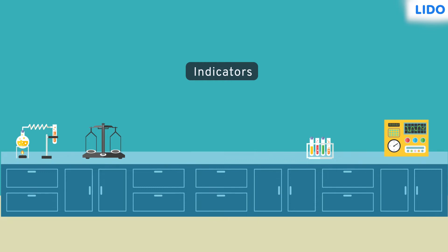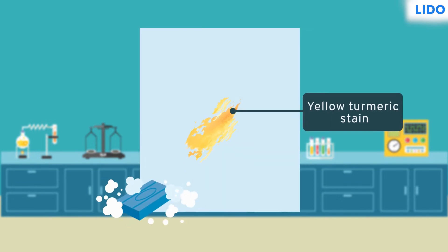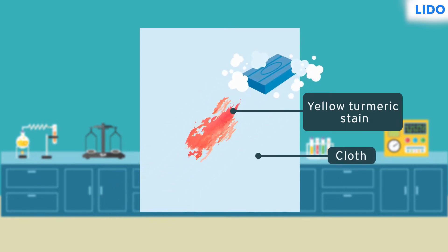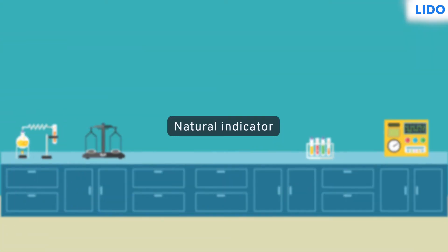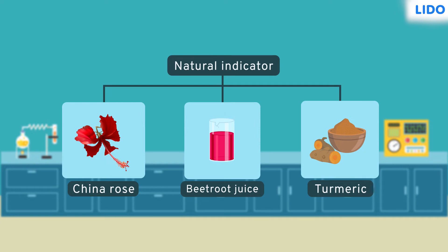These indicators are of two types: natural and laboratory indicators. Have you observed a yellow turmeric stain on a white piece of cloth turning red when soap is applied over it? It happens because turmeric is a natural indicator and soap is a base. Turmeric turns red in the presence of a base but shows no change in the presence of acids. Other natural indicators are china rose and beetroot. However, natural indicators are not convenient to use in a science laboratory.